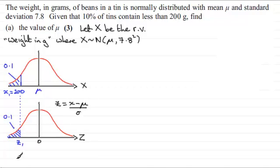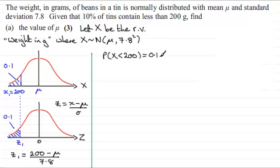Now we should be familiar with the fact that any Z value is always equal to the corresponding observed value from this distribution minus the mean mu divided by the standard deviation sigma. So Z1 will equal the observed value, which is 200, minus the mean mu, which we're trying to find, divided by the standard deviation, which we know is 7.8. Now we know that the probability that X is less than 200 is equal to 0.1. And this statement corresponds to the fact that the probability of Z being less than Z1 must also be equal to 0.1. Now if we can find out what Z1 is, we can now rearrange the equation to solve for mu.